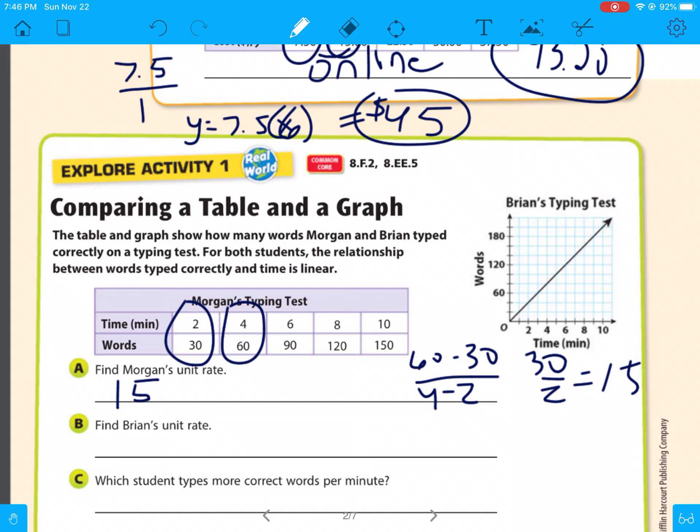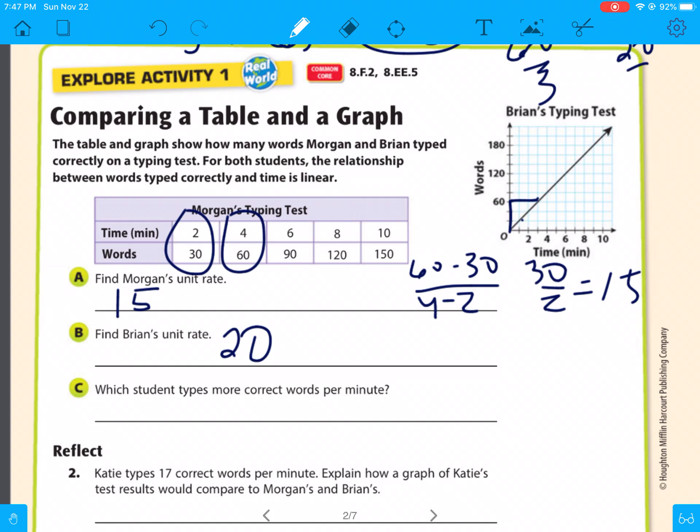Now, Brian, we're going to have to figure out. Looks like it's going to be 20 over 1. So if you do rise divided by run, you can go up 60 over 3 or 20 over 1. So Brian types faster than Morgan. Which student types more correct words per minute? Brian.